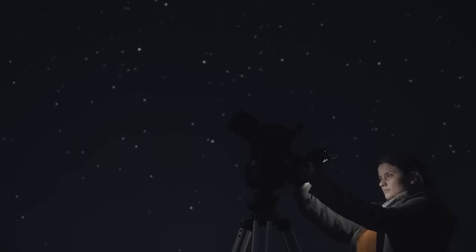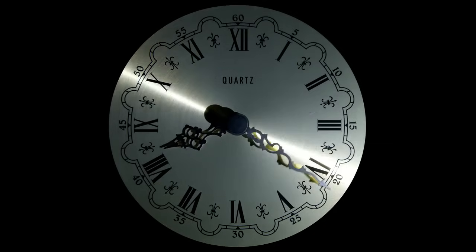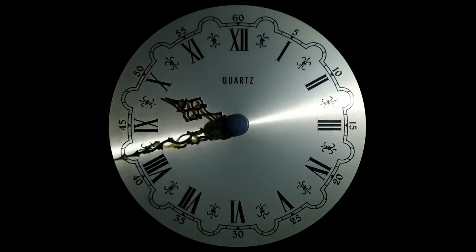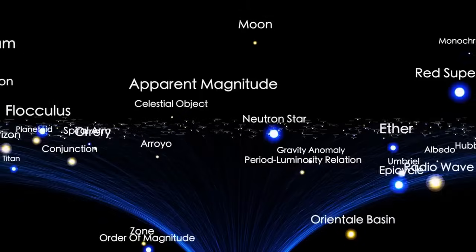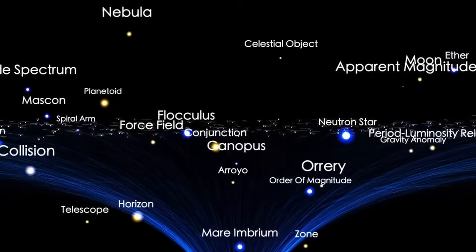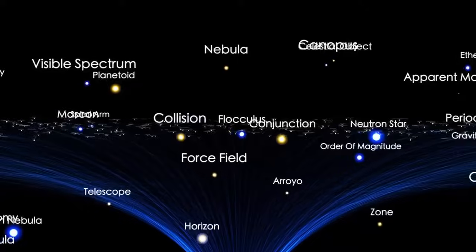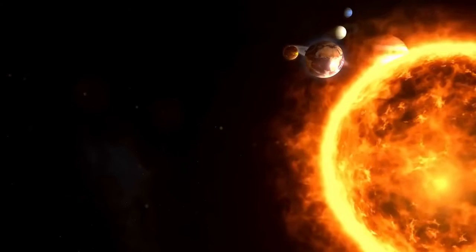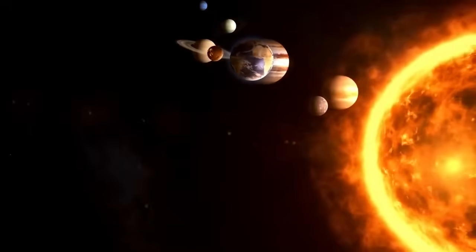This peculiarity is no coincidence, since Betelgeuse, as the star is called, is no ordinary star. Although to us it may appear to be just one more in the vast firmament, it is located at a distance of more than 640 light years from us.